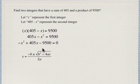So we're going to identify a, b, and c here. a is negative 1, the coefficient on the x squared term. b is positive 405, and c is negative 9,500. So now what we're going to do is substitute into our quadratic formula.